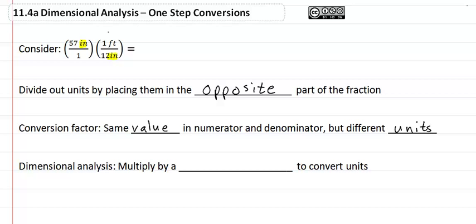If you go to our example here, we have one foot over twelve inches. They are equal, they are the same distance, that's what we mean by the same value. And in dimensional analysis, we multiply by a conversion factor to convert the units.